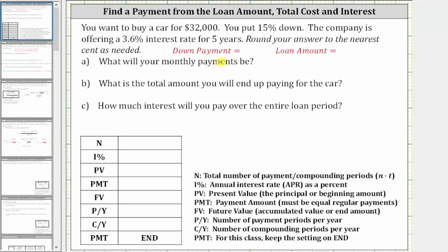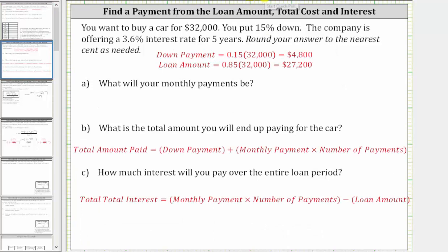We will determine the monthly payments by using the TVM solver as well as the loan formula. To begin, we need to determine the down payment and the loan amount. The down payment is 15% of $32,000, which means the loan amount is 85% of $32,000 — 85% because 100% minus 15% is 85%. To find the percent of a number, we convert the percent to a decimal and multiply. Therefore the down payment is 0.15 times 32,000, giving us $4,800, and the loan amount is 0.85 times 32,000, which equals $27,200.